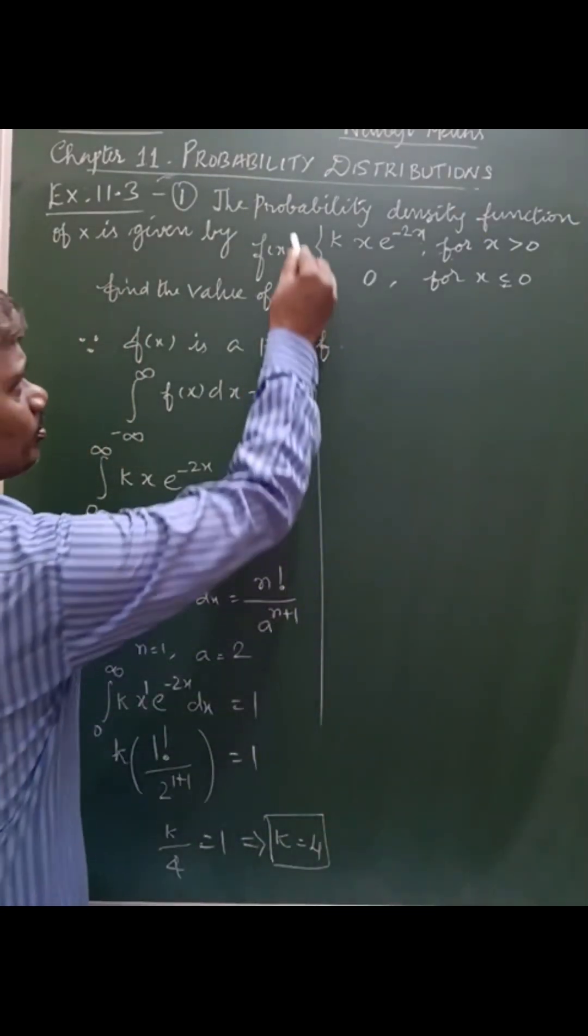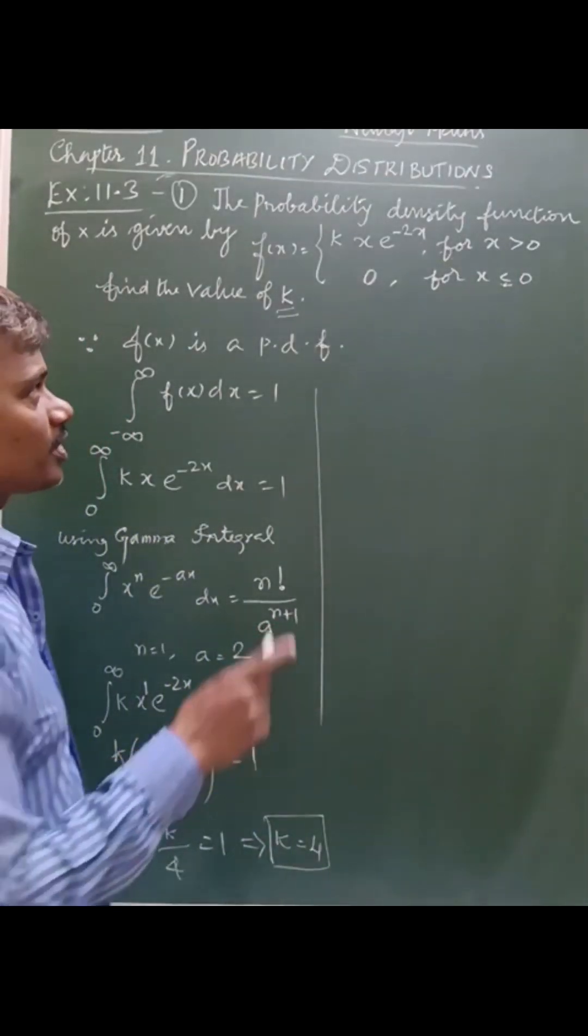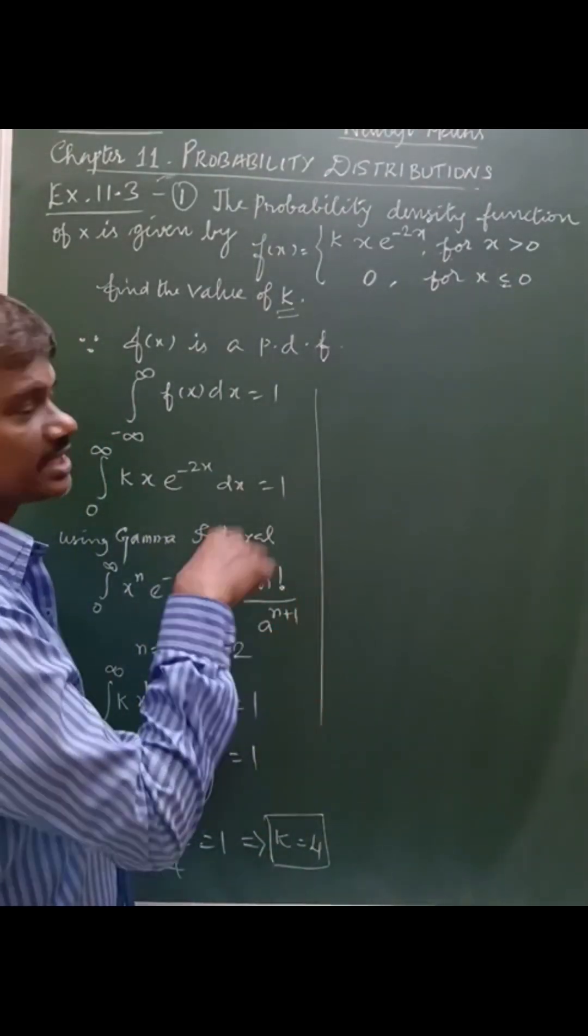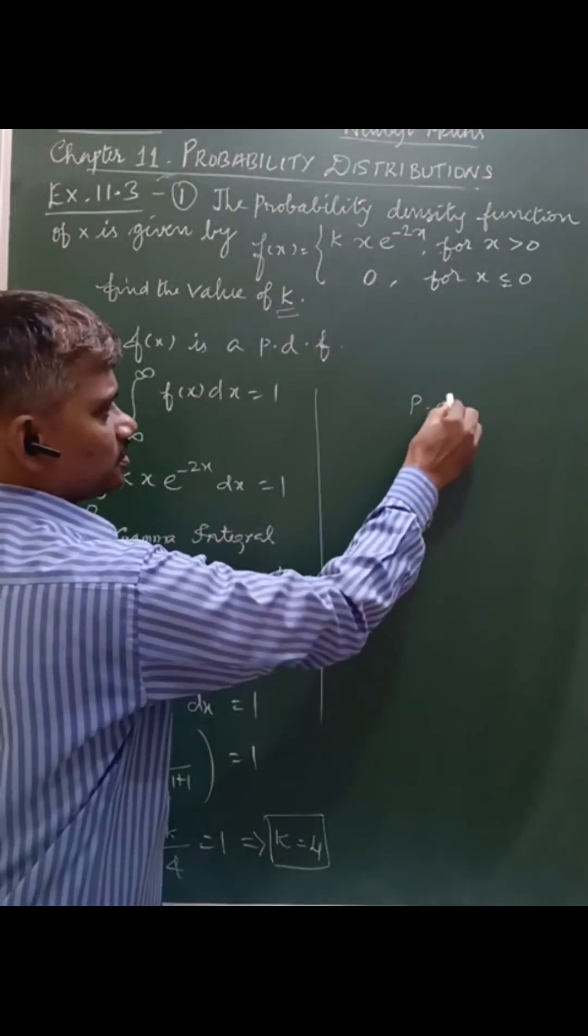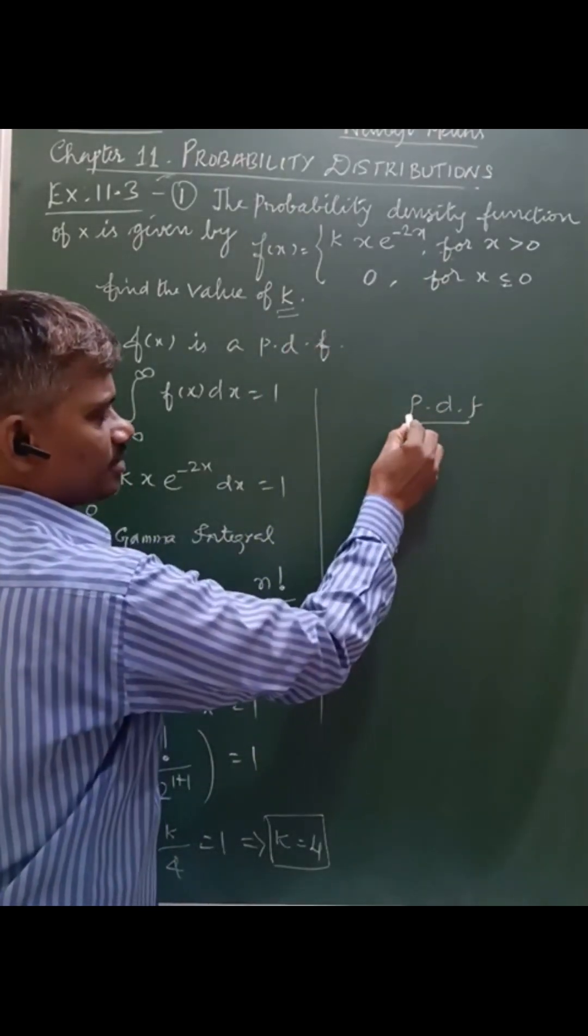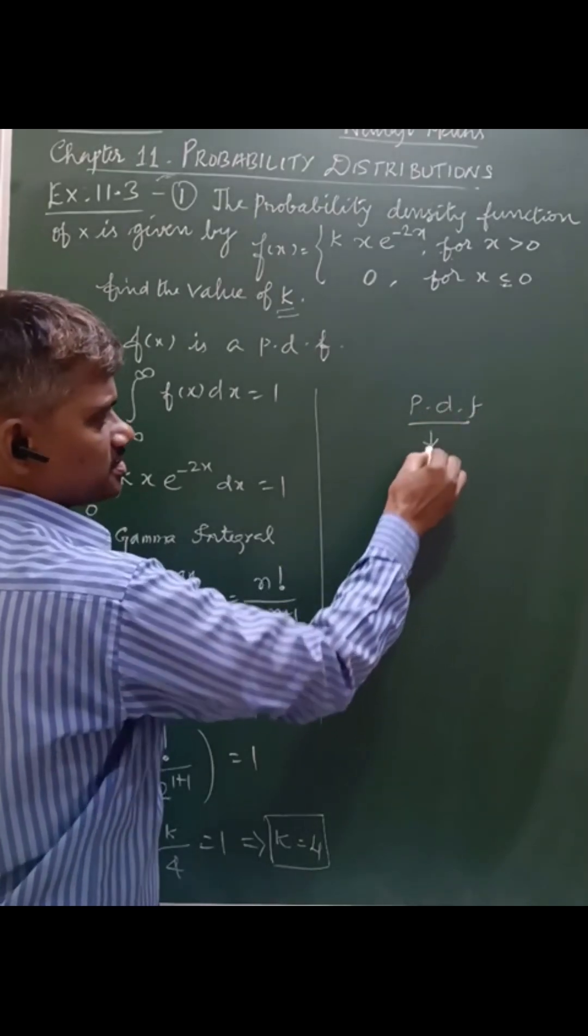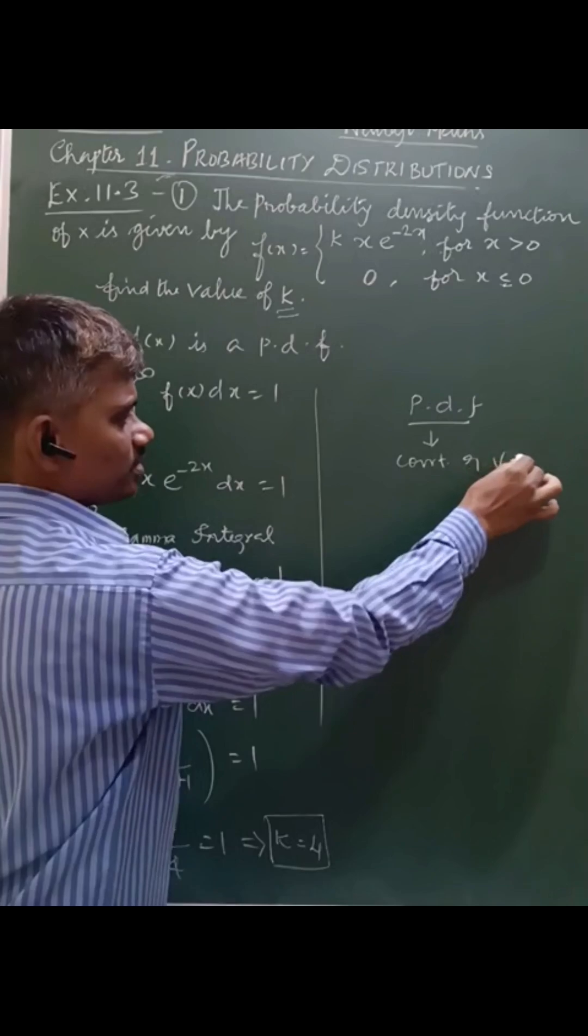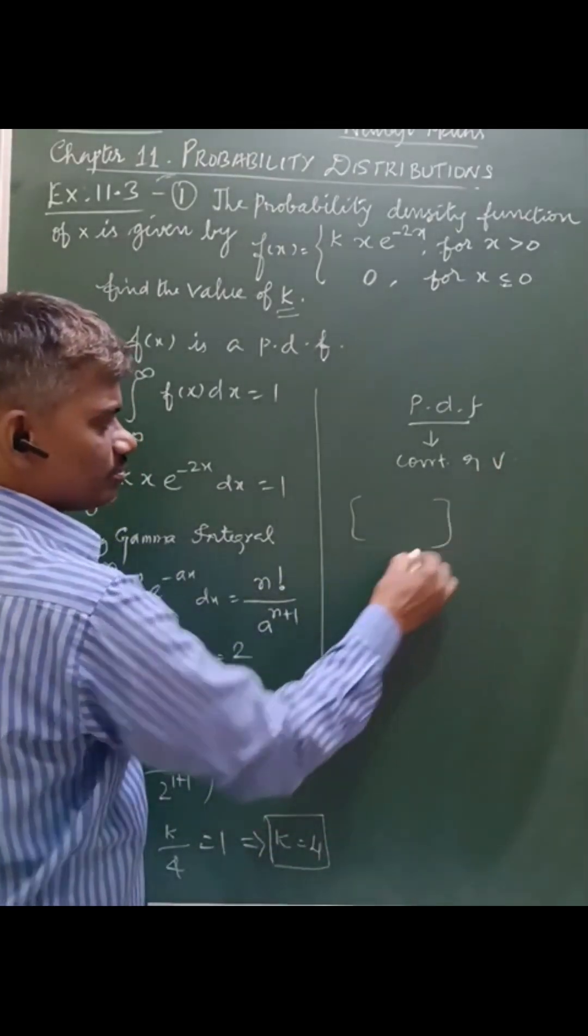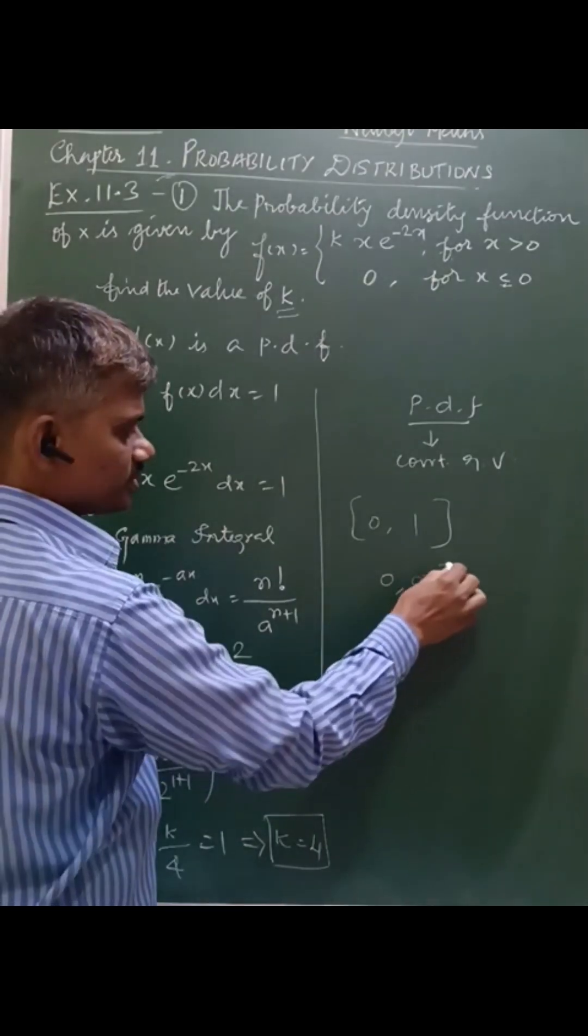Here the function is probability density function. Last exercise 11.2 was probability mass function, that is for discrete random variable. This PDF, short for probability density function, comes under the continuous random variable. Continuous random variable between the limits, for example 0 to 1, or 0 to infinity.